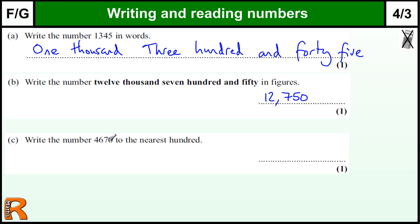Write the number 4670 to the nearest hundred. So there's the hundreds. So 670, which is closer to 4700 than it is 4600.